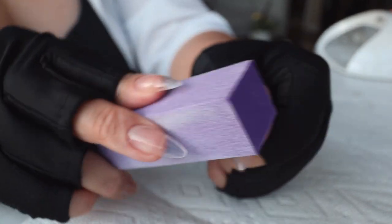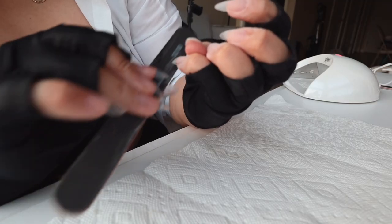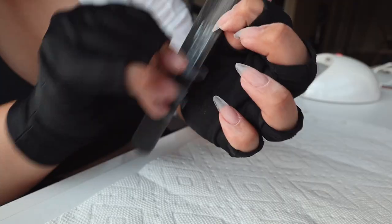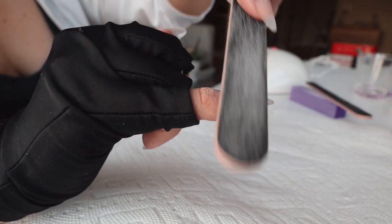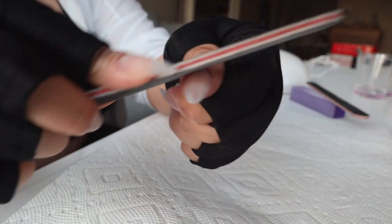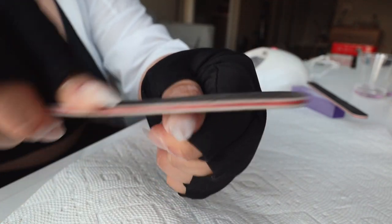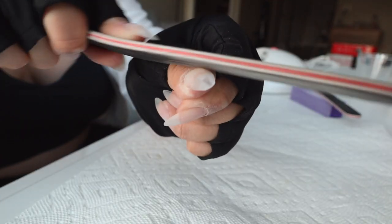Next, I buffed out the gel tips in order to roughen them up and prepare them for the nail polish. I also used a nail file to clean up the edges and also roughen up the gel tips further. I also used this nail file to clean up the edges around the cuticles and to really blend the gel tip into my natural nail.